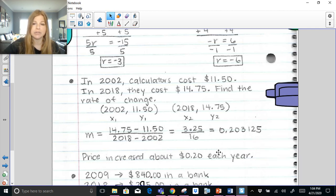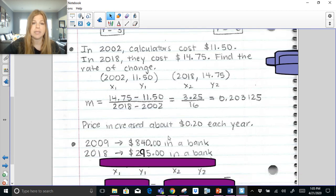So the price increased because it's a positive number. It's a positive slope. So the price increased about $0.20 each year. That's what that is. Same thing here.